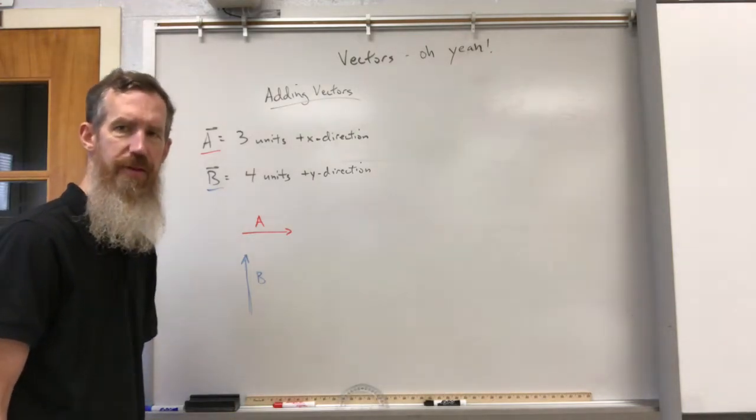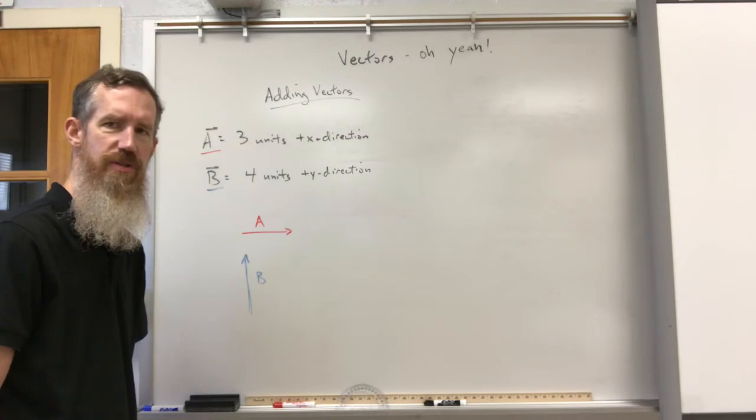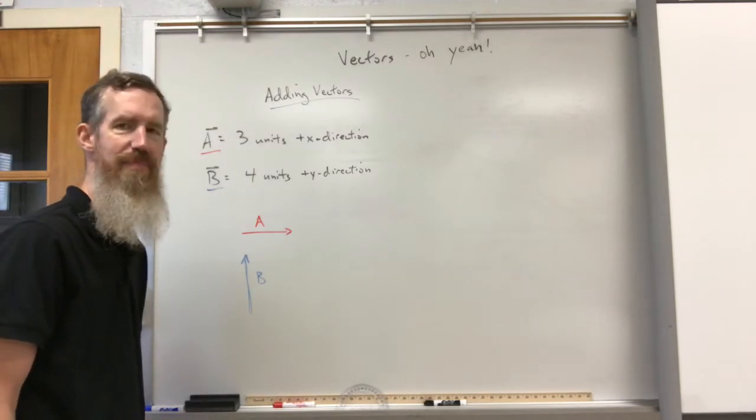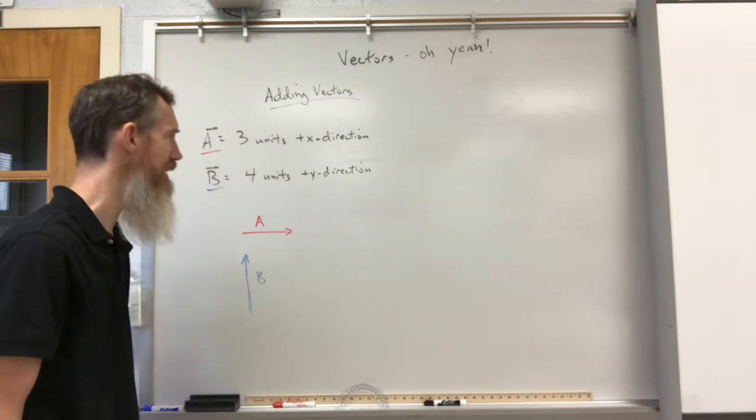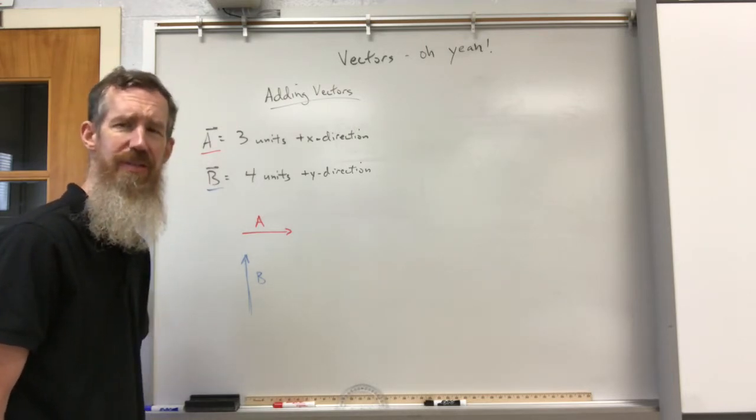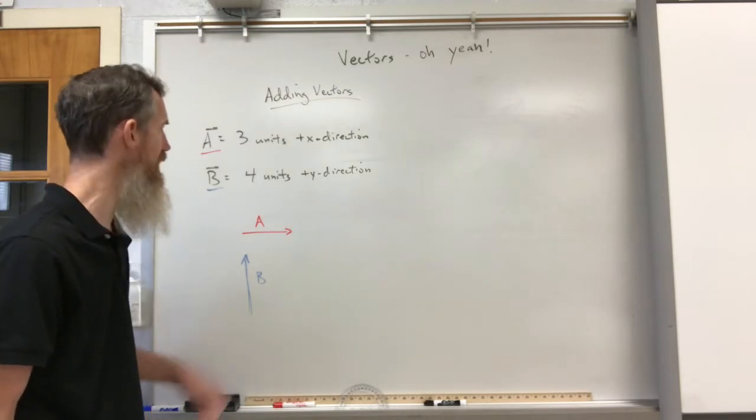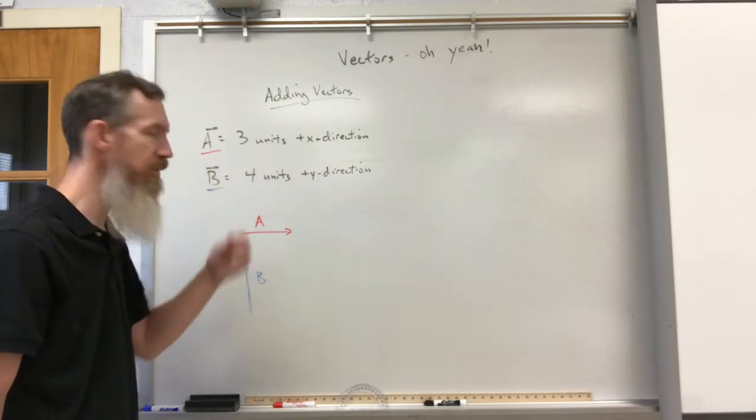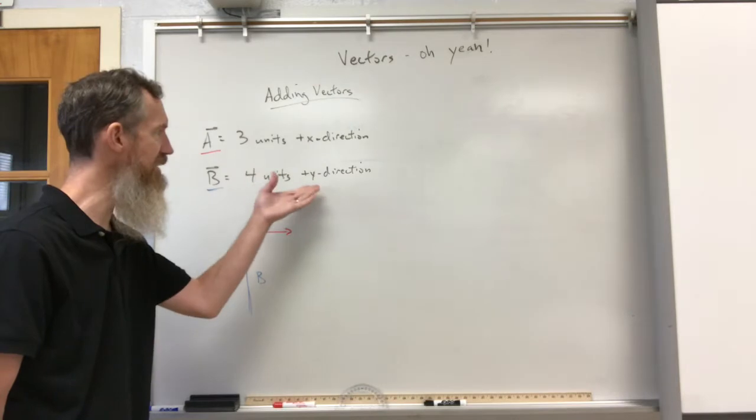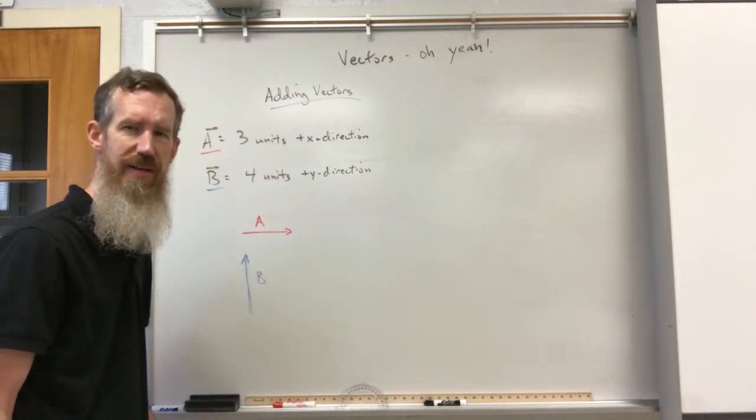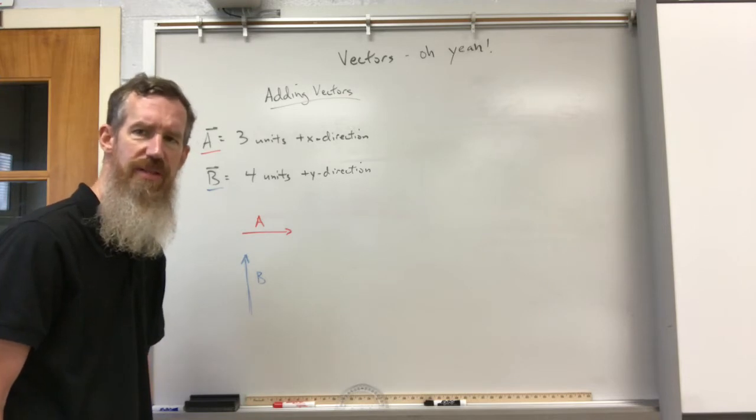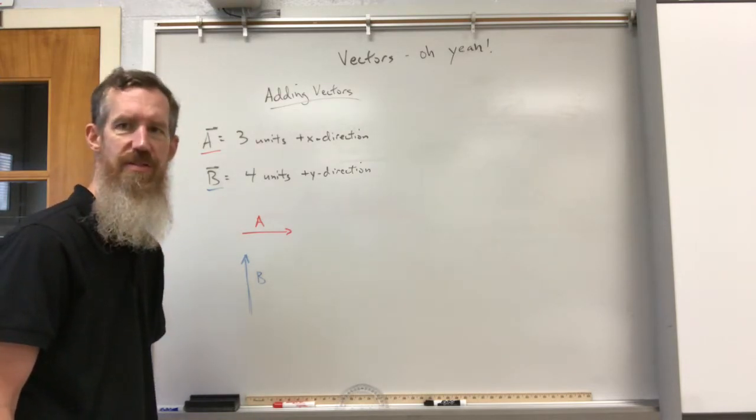Sometimes you're going to see situations where they mention a couple of vectors. They may keep it generic and not even give you particular physical units. They may just say, hey, we have vector A, it's three units long, and vector B, it's four units long, and they are acting in the positive x and positive y direction. So you don't have to use north, east, south, and west. You can just use plus x, plus y and the coordinate system as you would in a math class.